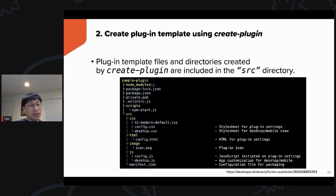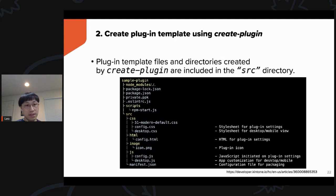Once you finish answering all the questions, the folder and files will be created. Using the example demonstrated, the plugin is named 'simple-plugin'. Inside that folder you'll see: node_modules, package.json, private.ppk, scripts, .eslint, and most importantly the source folder (src directory). Inside src, there are folders for css, html, image, and javascript, plus a configuration file called manifest.json.